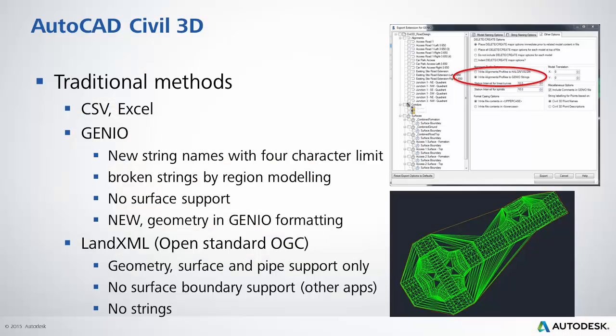When it comes to exporting our corridor models to construction, we have a couple of methods we'd normally take. Going to a report-based method, going to an Excel or a CSV type output is traditionally there, and it's supported within the reports in Civil 3D.